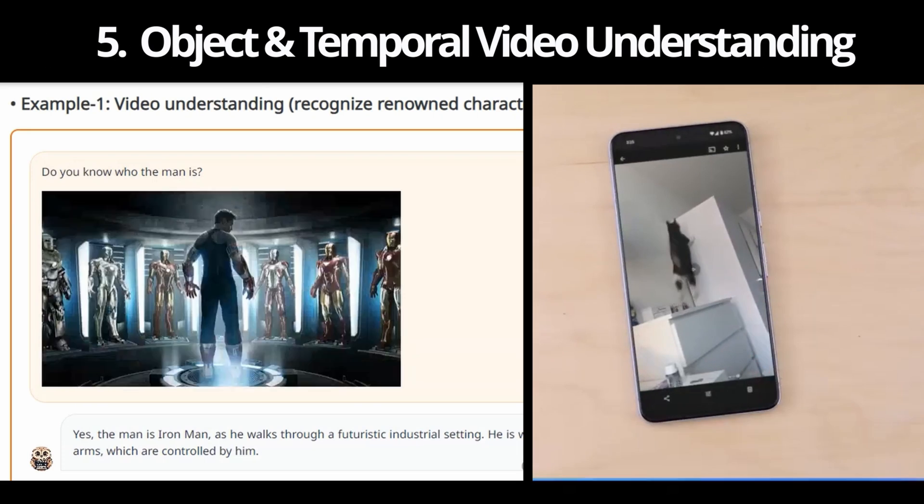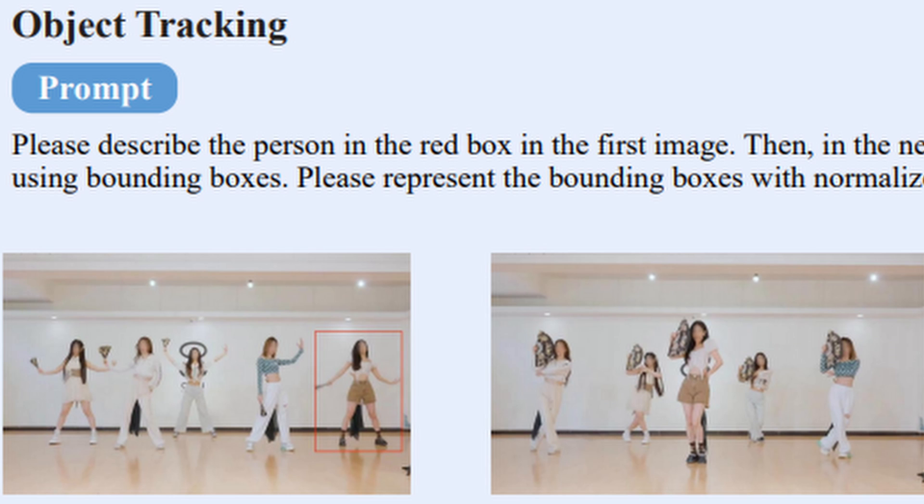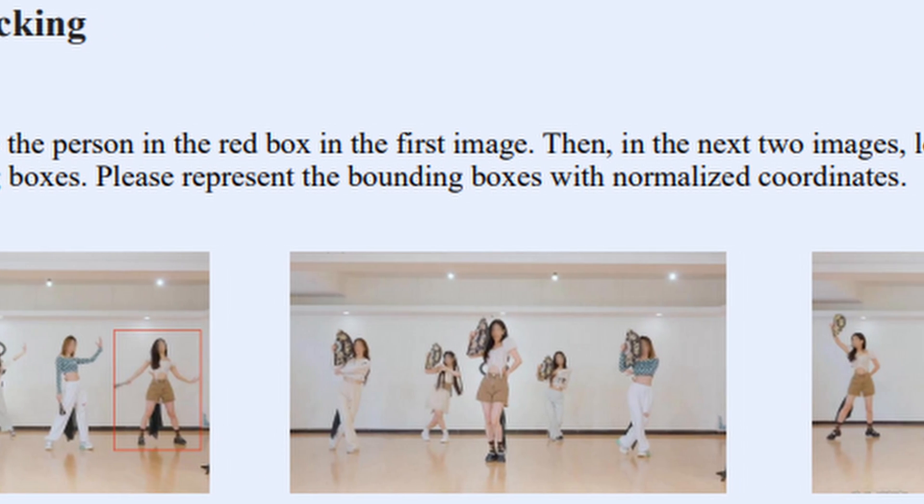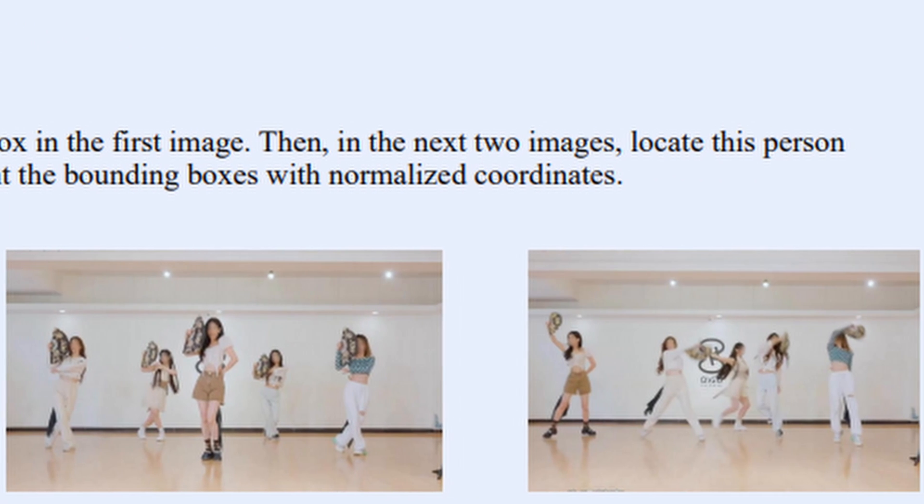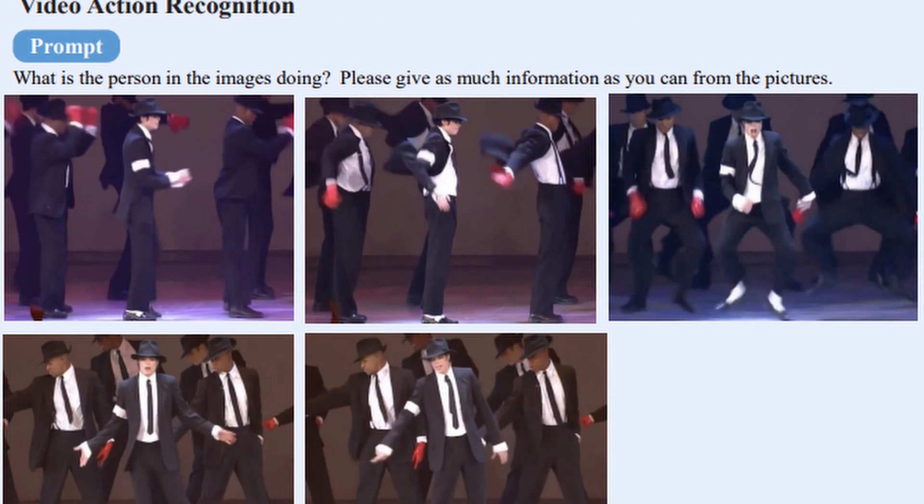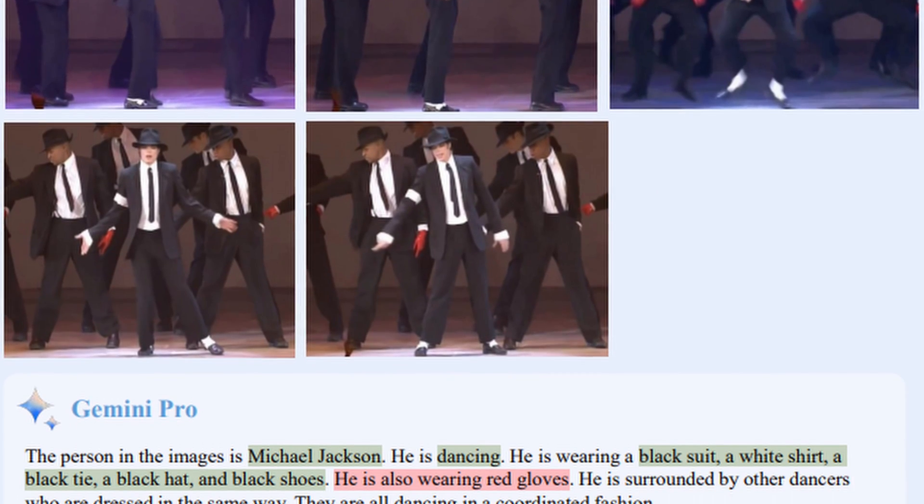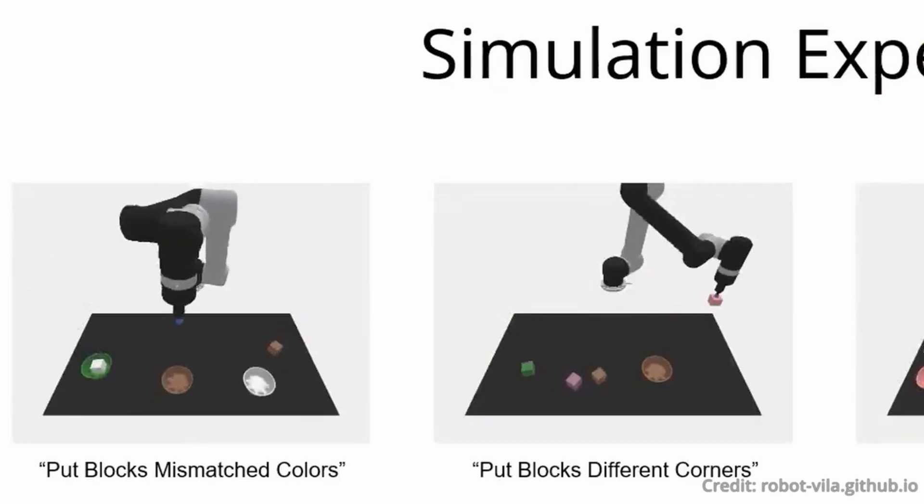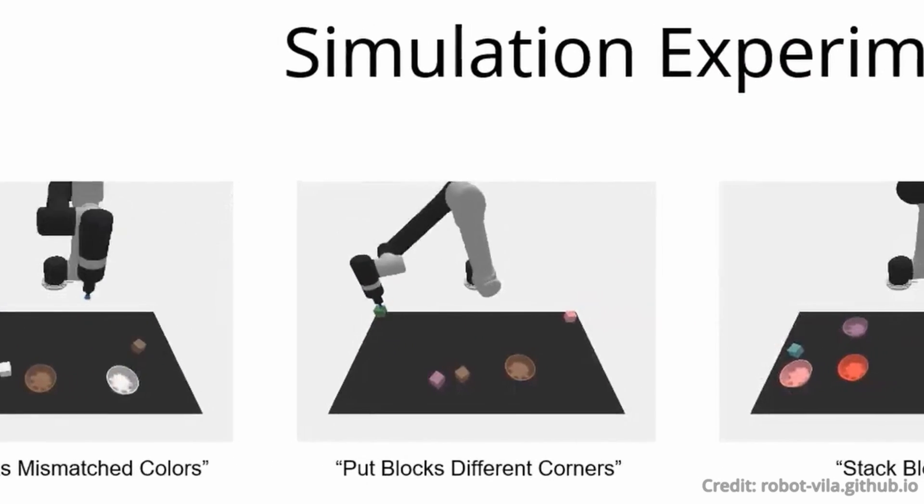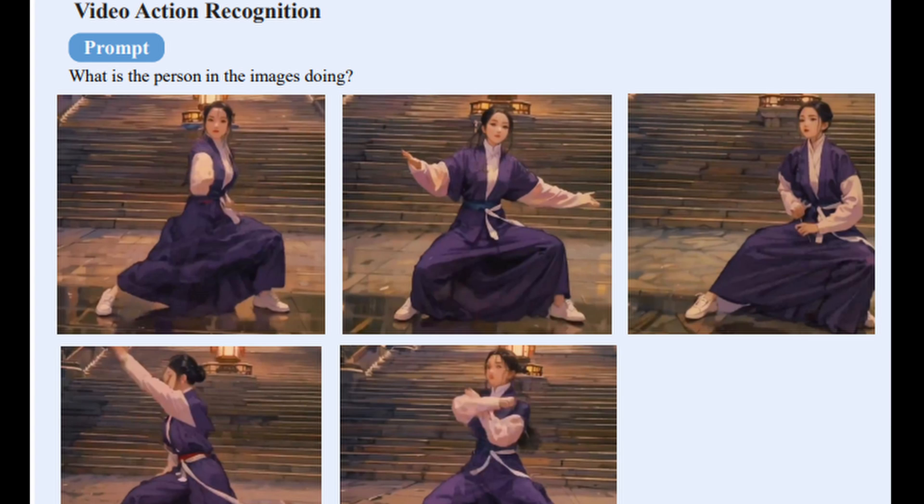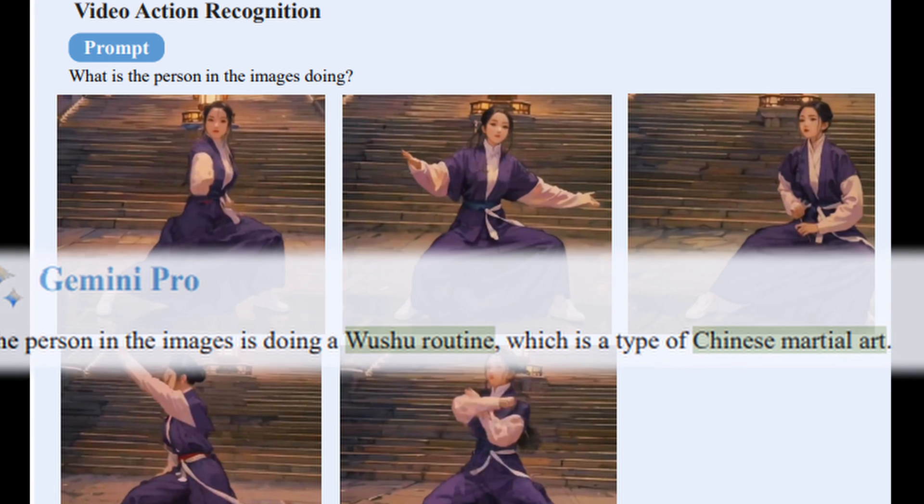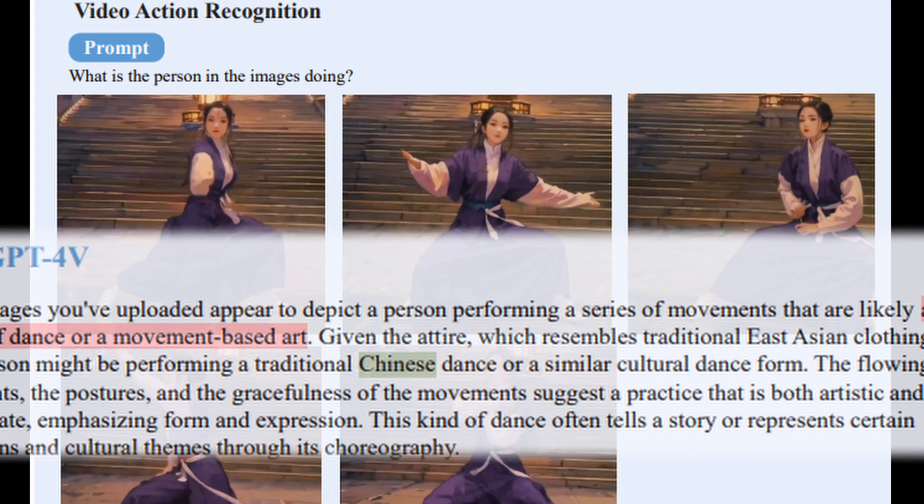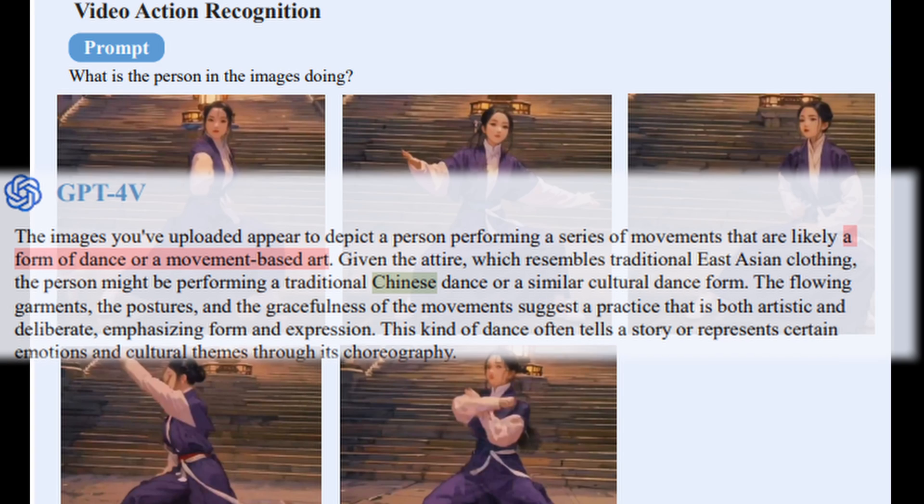Number five: object and temporal understanding. Object localization refers to the ability to pinpoint the exact location of objects within an image, while temporal video understanding involves analyzing and comprehending the sequence and context of events in a video over time. In tests, both models performed on par with one another in localizing objects within images and understanding temporal aspects in videos, which are both vital for tasks involving dynamic visual environments.